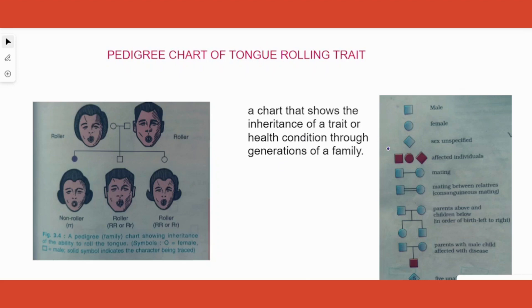We need to know what does that symbol mean. Every time a circle is used it is for a female, a square is used it is for a male. If it is connected by a single line like this it shows that they are mating or they are married.